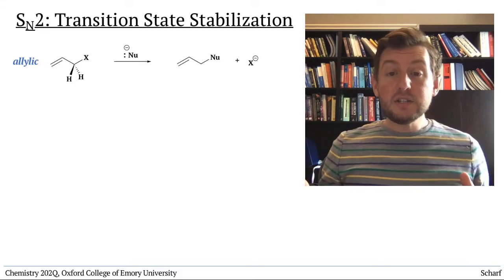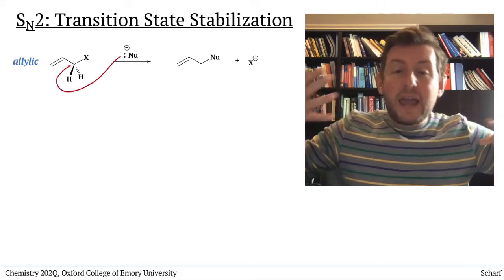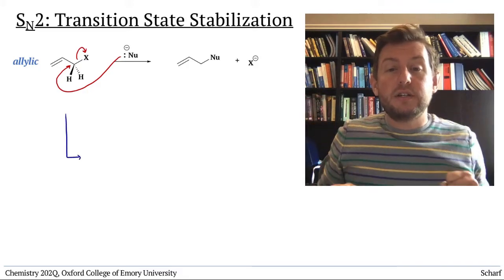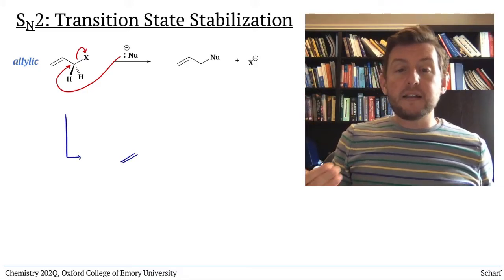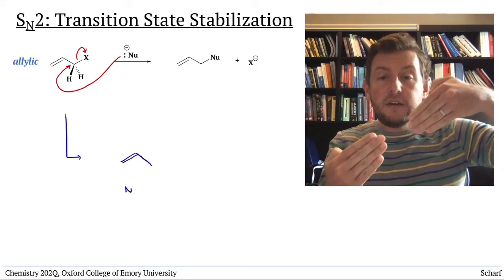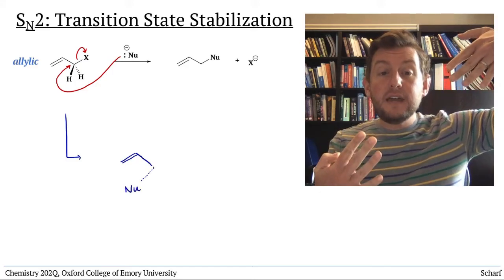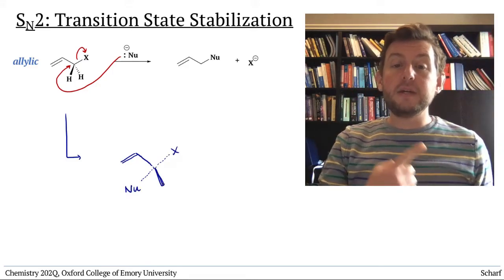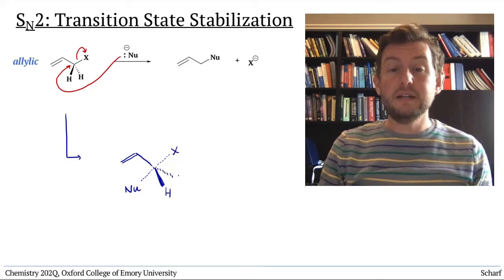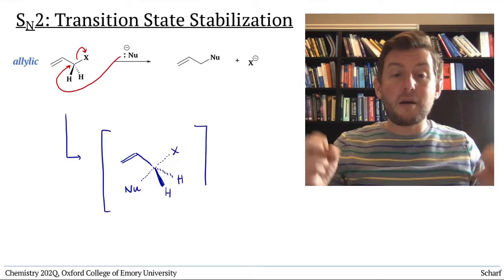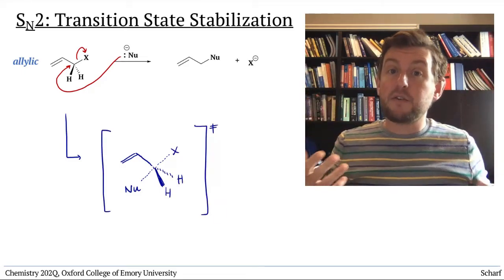Remember that the transition state is the halfway point in the SN2 reaction, in which the nucleophile is approaching, the leaving group is in the process of leaving, and the other three groups on the central carbon are in the midst of their umbrella flip, their inversion of configuration.